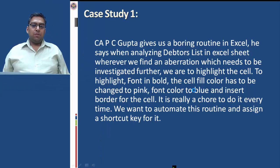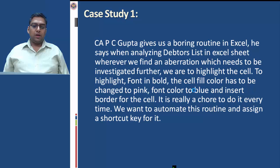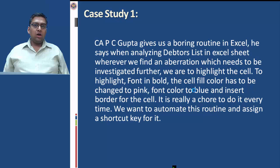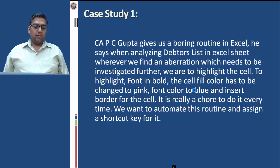Moving to Case Study 1: CA PC Gupta gives us a boring routine in Excel. When analyzing a data list in an Excel sheet, wherever we find an abbreviation that needs to be investigated further, we are to highlight the cells: set the font to bold, change the cell fill color to pink, set the font color to blue, and insert a border for the cell. We want to automate this routine and assign a shortcut key for it.